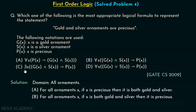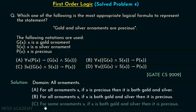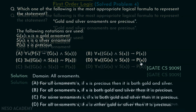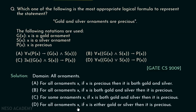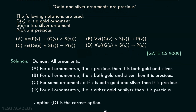For option C: there exists x, G(x) and S(x) implies P(x) — for some ornaments x, if x is both gold and silver, then it is precious. This is also incorrect. The last option D: for all x, G(x) or S(x) implies P(x). This converts to: for all ornaments x, if x is either gold or silver, then it is precious. This is the correct option, so option D is the correct answer.